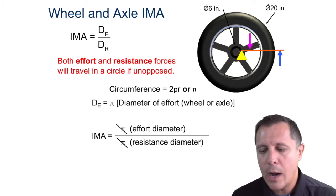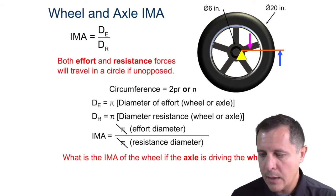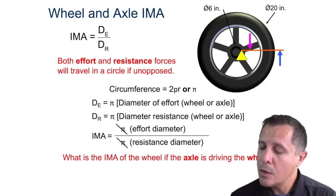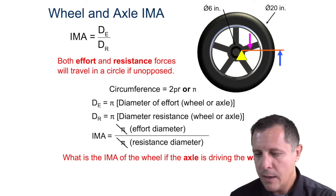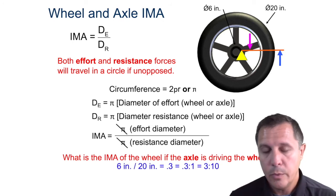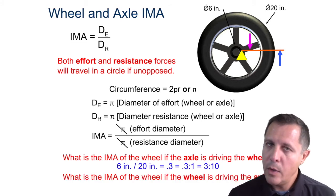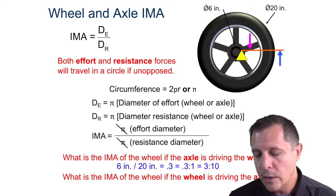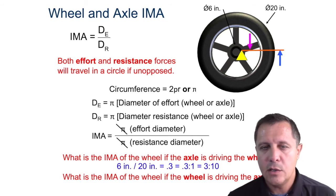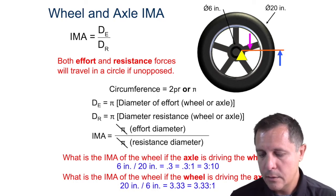Pi cancels out, which is why we use just diameter. Go ahead and calculate: if we have axle driving wheel, what is the IMA? We get 6 inches divided by 20 inches, or 0.3 to 1 — that's your IMA. What if it's the other way — wheel driving axle? You should get 3.33 to 1.